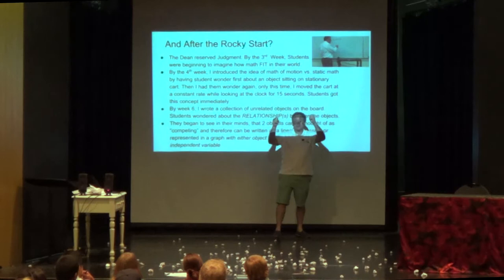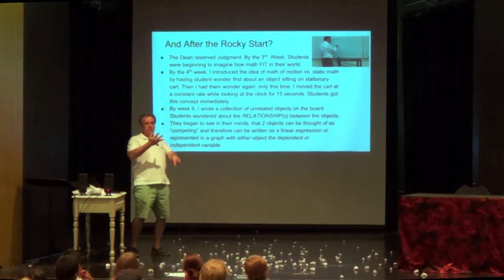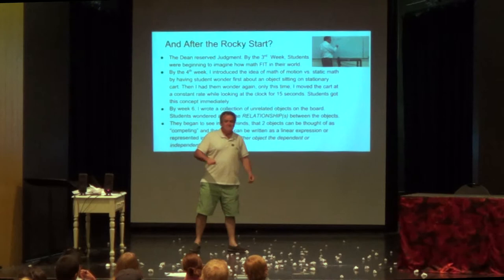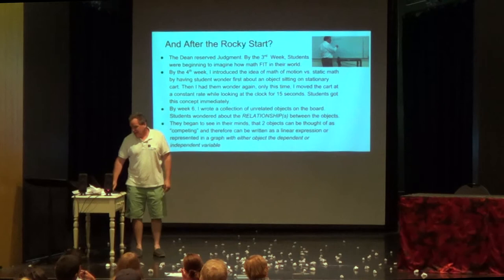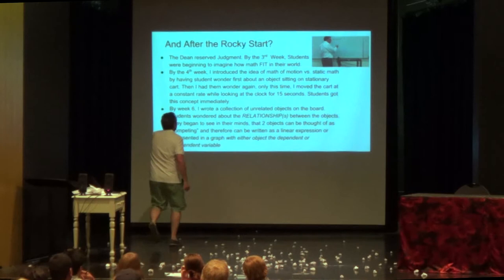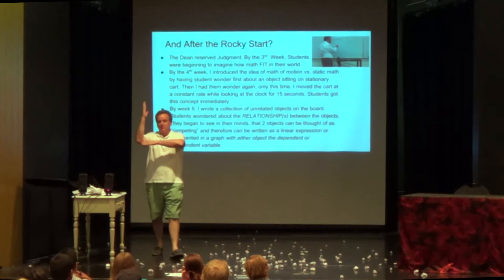They wrote about what they thought about math and invariably it was static — how big it is, how this and this. Then I looked at a clock and moved it for 15 seconds. Boom — they immediately moved right into math of motion, rates and this. And they were not good at this; these are struggling students that already had all this. By week six, I had objects written up on the board and they had to relate them. That was my ultimate goal. And then in their minds they saw that the objects were competing, and they were able to start putting them on a graph — the independent and the dependent variable — and then they were able to switch them.